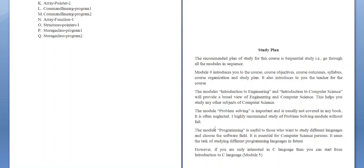Module 0 is something everybody has to go through, because it introduces you to the objectives and outcomes of the course. For problem solving, there may be a title called problem solving but no book really discusses it well. The recommended book for problem solving is 'How to Solve It' by Polya. I recommend you try to purchase that book, or you can download it.